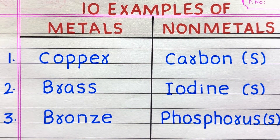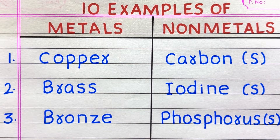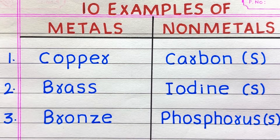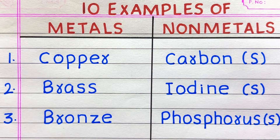First example of a metal is copper. First example of a non-metal is carbon, second iodine, third phosphorus. Carbon, iodine, and phosphorus are solids at room temperature.